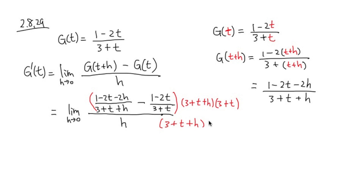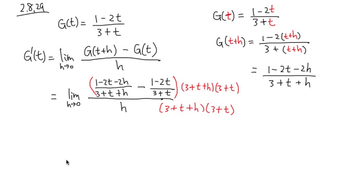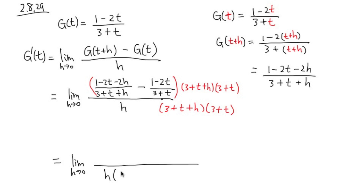We multiply the top and bottom by (3 plus t plus h)(3 plus t). For the next line, we copy down the limit as h approaches 0. The reason we multiply by the LCD is to fix the top. We multiply out the top and leave the denominator as h times (3 plus t plus h)(3 plus t). On the top, distributing into the first term, the denominator of g(t+h) cancels, leaving (1 minus 2t minus 2h) times (3 plus t).